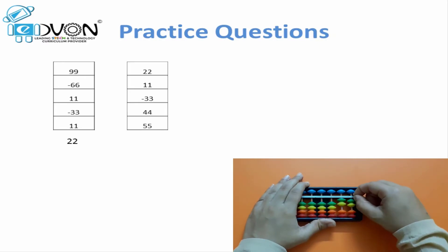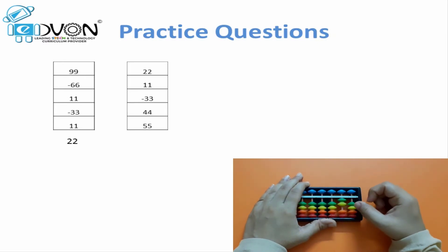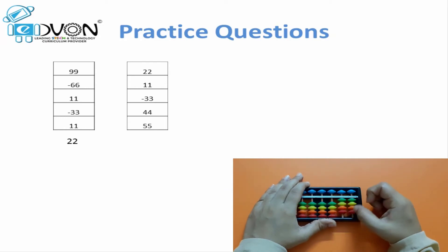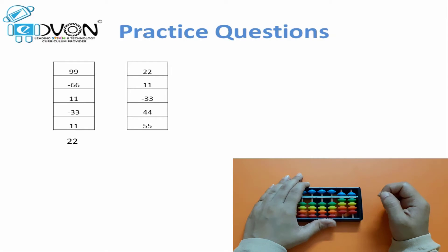Make your abacus zero. 22 plus 11 minus 33 plus 44 plus 55. Answer: 99.